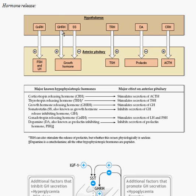You can see here that growth hormone releasing hormone — this releasing factor — will cause the stimulation of growth hormone to be released from the anterior pituitary, whereas somatostatin (SS) will cause the inhibition of growth hormone, stopping growth hormone from being released into the body.